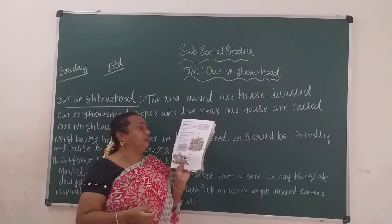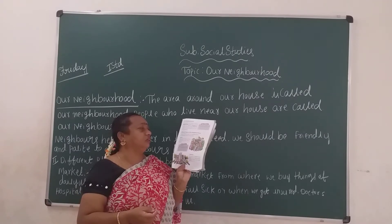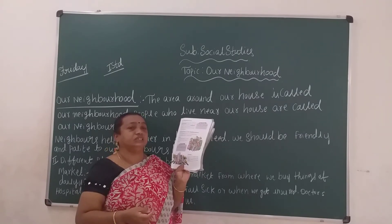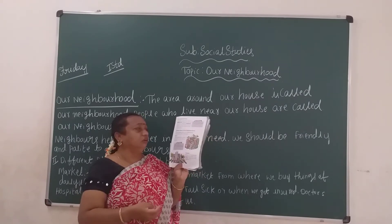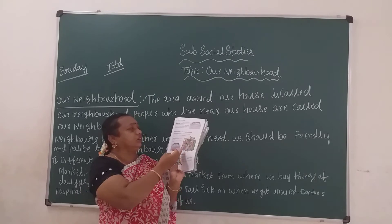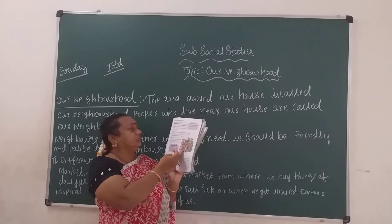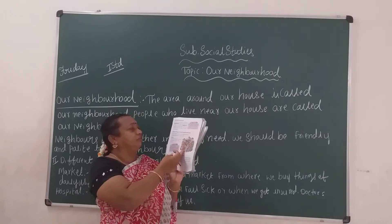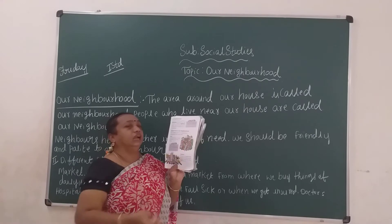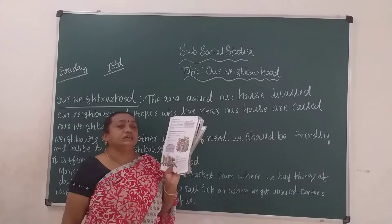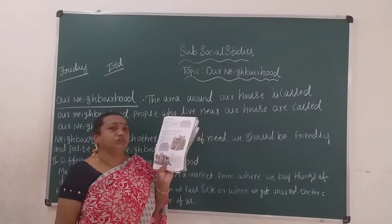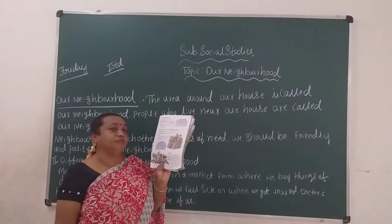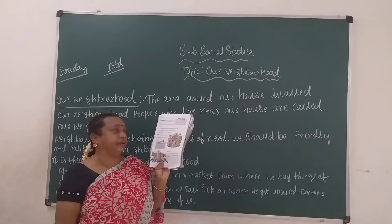Now, different places in our Neighborhood. Some of the neighborhood places you can see, children. Look at this picture. What are these, children? There are different places in our Neighborhood. Let us learn about the Neighborhood Market first.